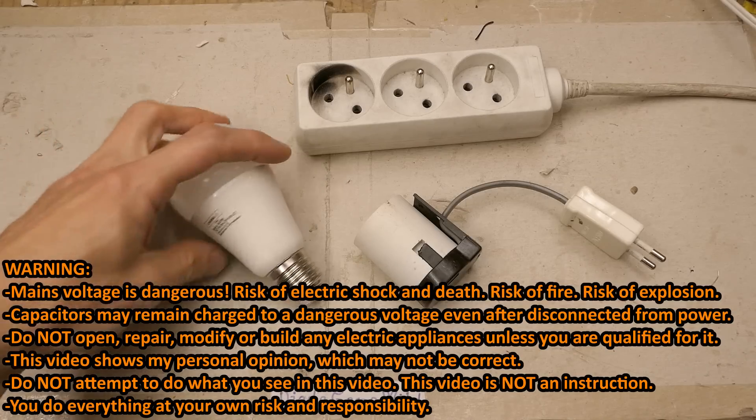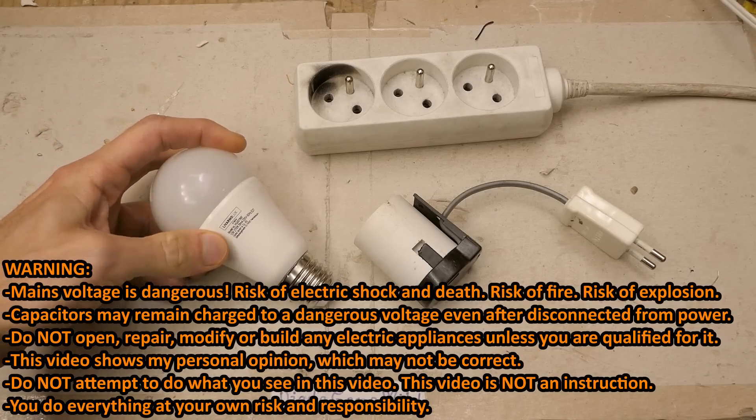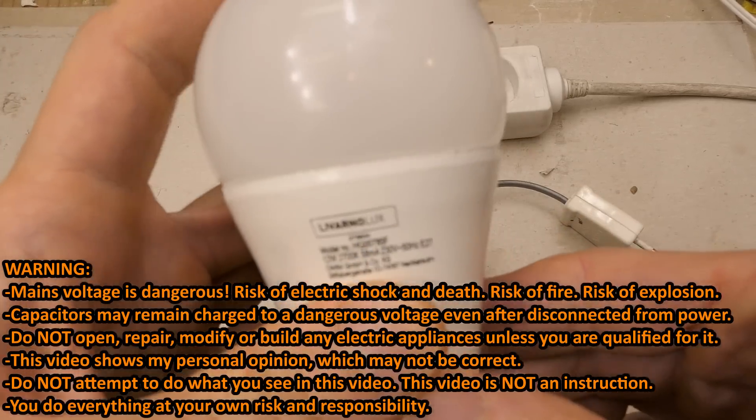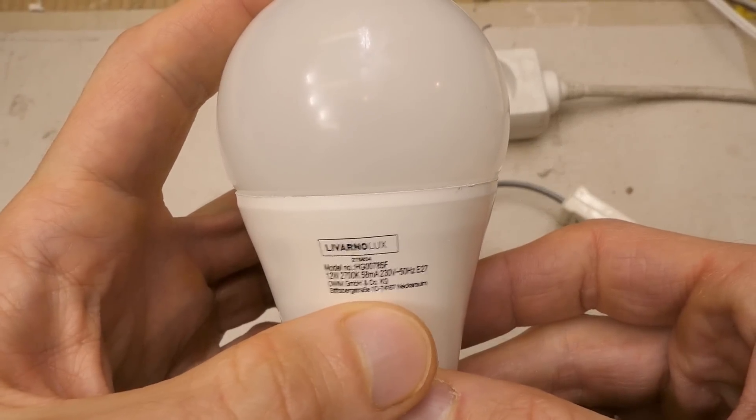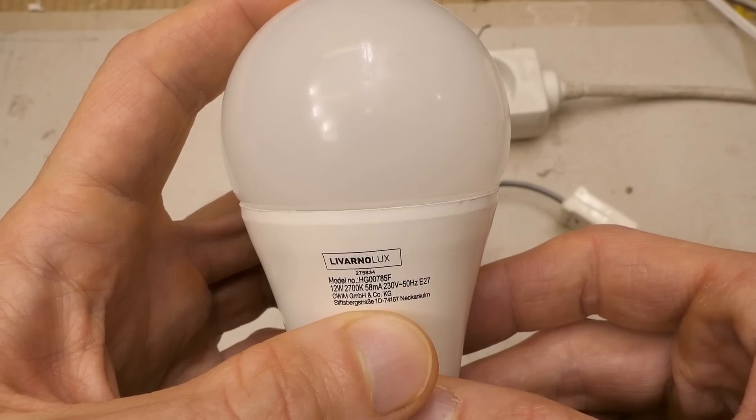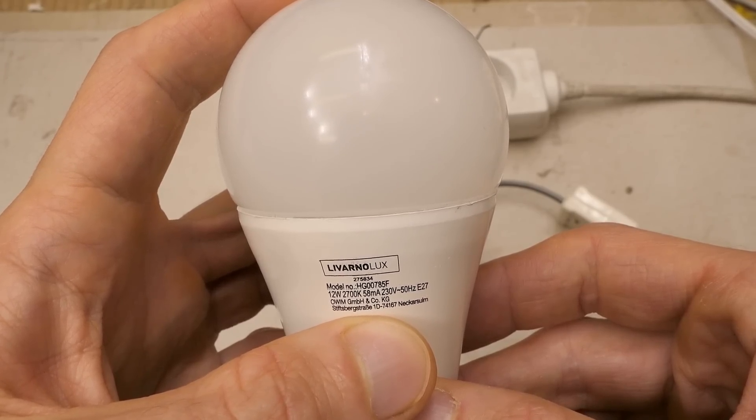So today let's explore a failed LED lamp. I guess this one is from a little supermarket and it didn't last very long. It lasted for about 1000 hours or one year. It would be a typical life for a tungsten lamp but quite a short life for an LED.